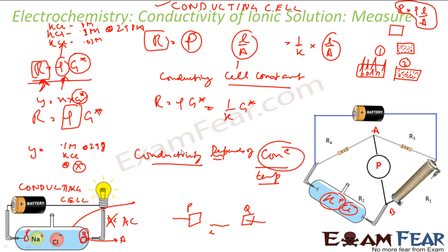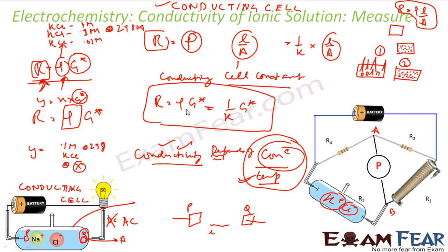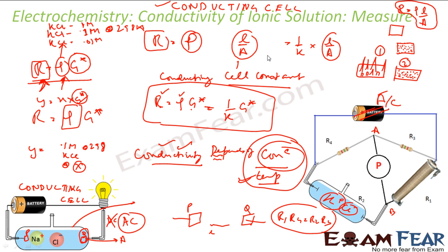Please note that conductivity depends on both temperature and concentration. When you increase temperature, the conductivity of an electrolyte solution increases, while metallic conductivity decreases — we have discussed this and will revisit it. Also note that in this setup, AC power is used for the Wheatstone bridge circuit because we are passing current through the ionic solution, and DC would change the electrolyte composition.